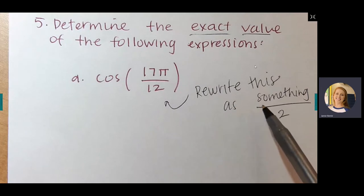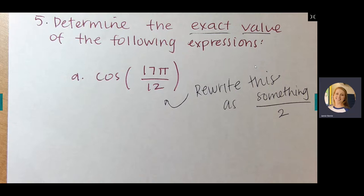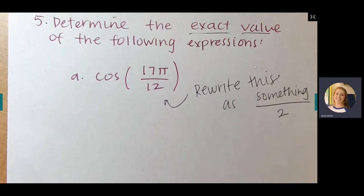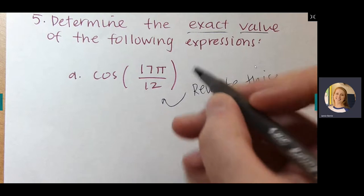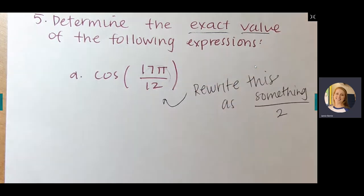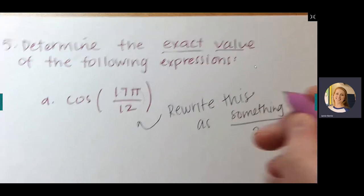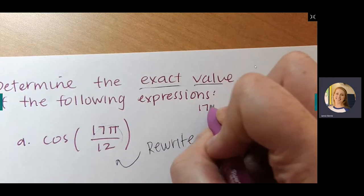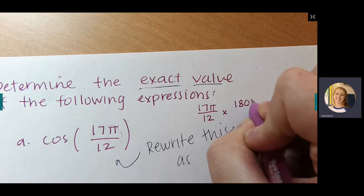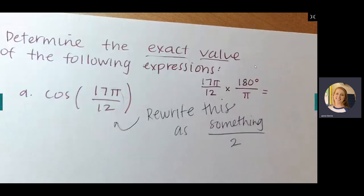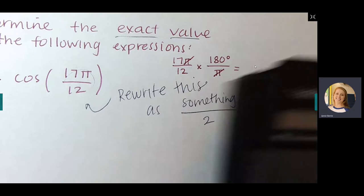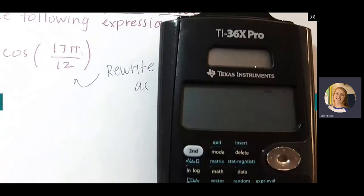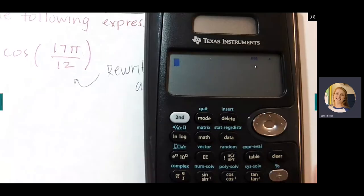We're going to rewrite the expression as something over 2, where that something is typically an angle on the unit circle. To make this easier, convert to degree form. So 17π/12 times 180°/π — the π's cancel — gives us 255 degrees.